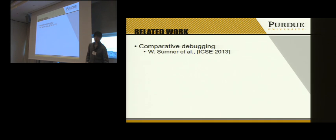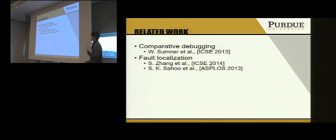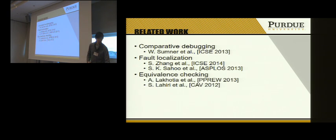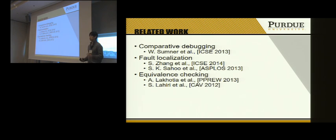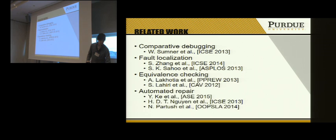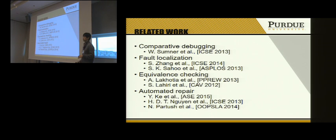Besides education-related work, there are many other works on comparative debugging and fault localization, but they all use multiple executions from the same program. There are also equivalence checking tools, but they simply provide test cases that differentiate two programs. Additionally, automated repair techniques exist, but simply repairing a buggy student submission does not help students learn from their mistakes.